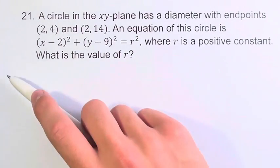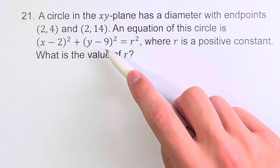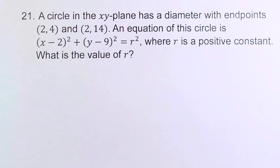An equation of this circle is (x-2)² + (y-9)² = r² where r is a positive constant. What we're asked is the value of r.